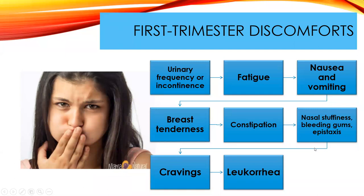First trimester discomforts include urinary frequency, fatigue, nausea, vomiting, and breast tenderness — these are all presumptive signs of pregnancy. You have to know what's normal to know what's not normal. Sometimes they can become extreme — for instance, extreme bleeding gums or nosebleeds can increase her chance of anemia, on top of the physiological anemia of pregnancy. We need to help keep her mucous membranes moistened to reduce nosebleeds.